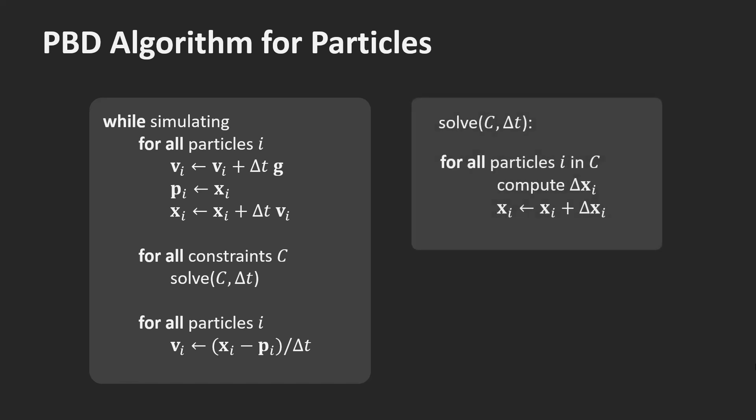In position-based dynamics, we solve a constraint by computing correction vectors delta x for all the particles participating in a constraint. These correction vectors are then immediately added to the particle positions after each constraint is solved. Position-based dynamics manipulates particle positions directly, contrasting with traditional methods that work with velocities or forces. This direct manipulation of positions gives the method its name and contributes to its intuitive nature and stability.